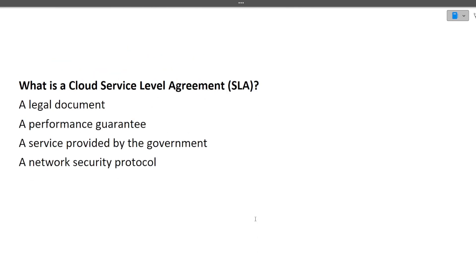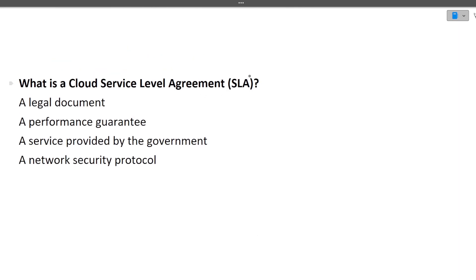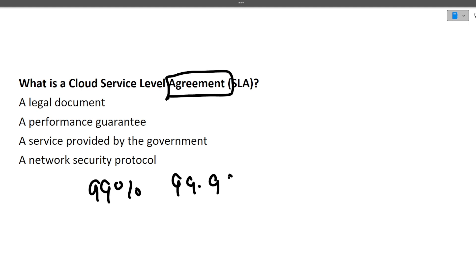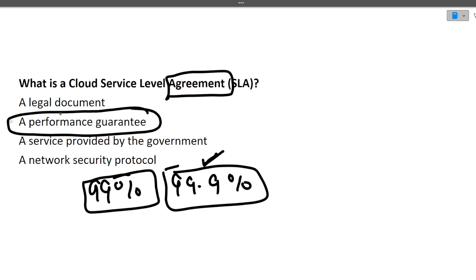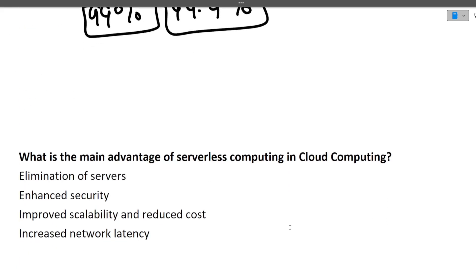The next question is: what is a cloud Service Level Agreement (SLA)? It is an agreement between the cloud and the service provider — a legal document that guarantees performance. For example, in AWS you may see that a service will be available 99% or 99.9% of the time. This is the SLA: a performance guarantee given to the user about service availability. More precisely, it is a performance guarantee.